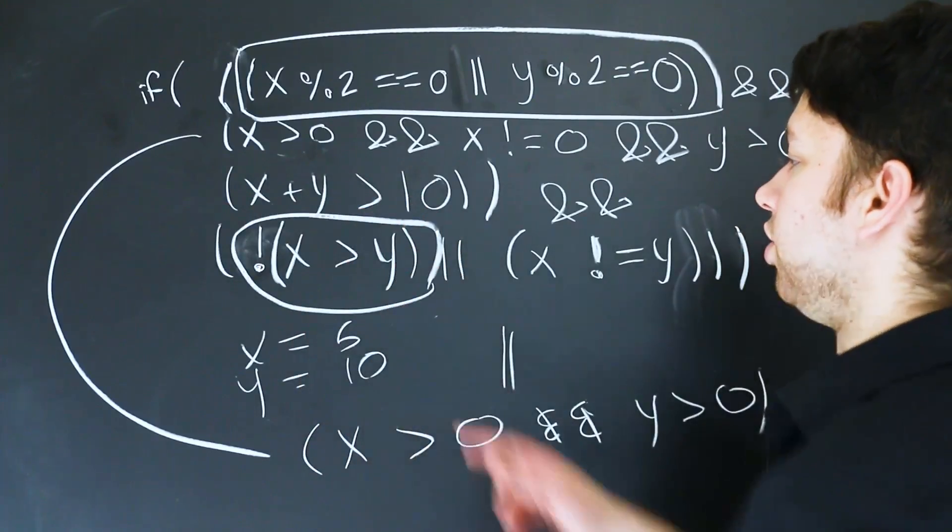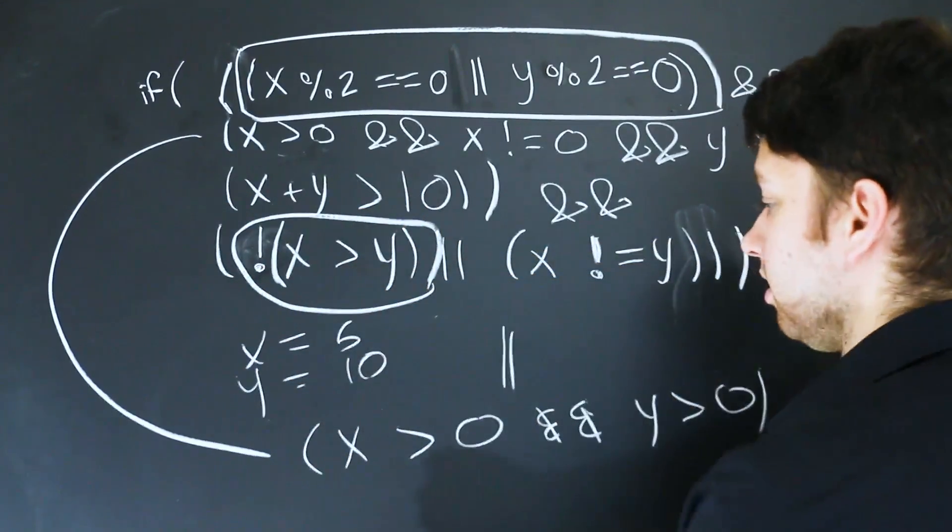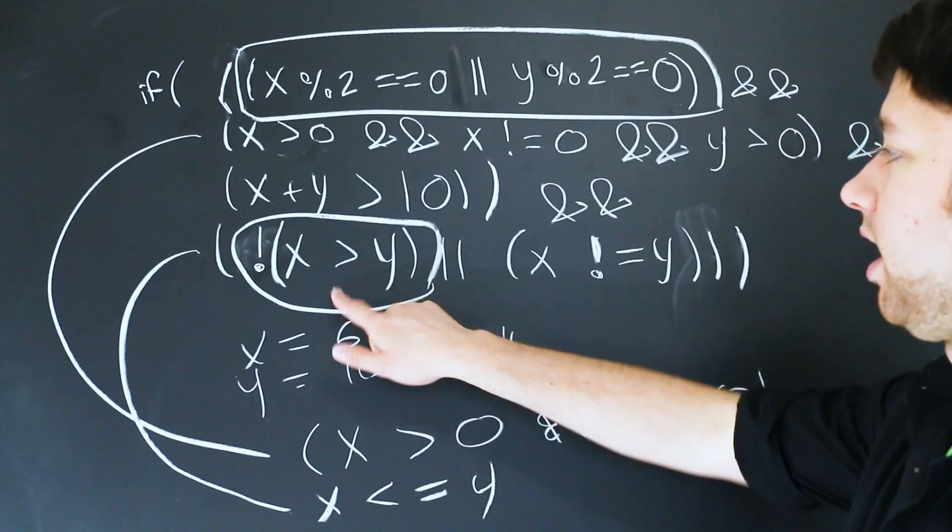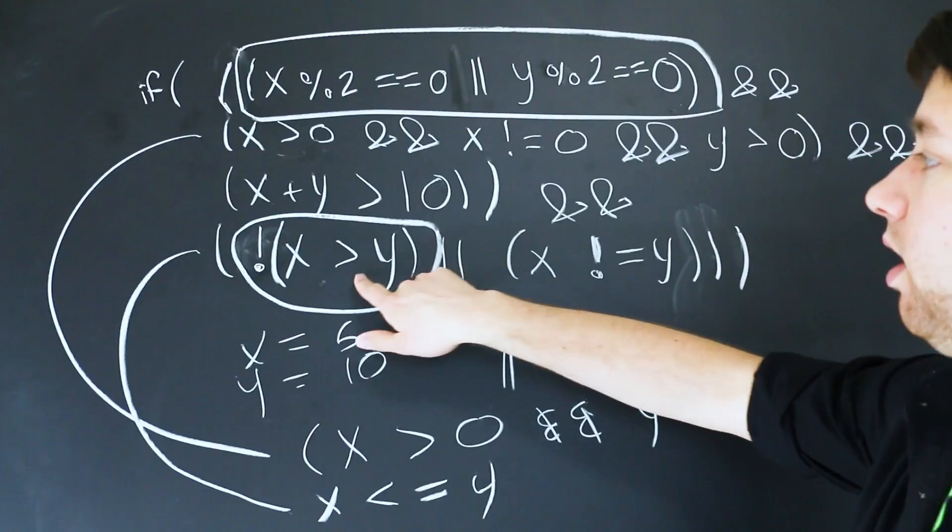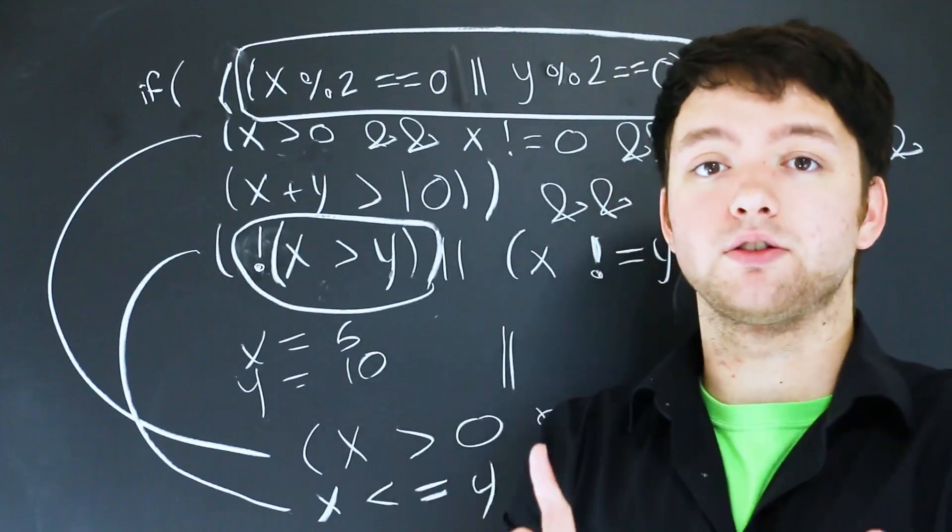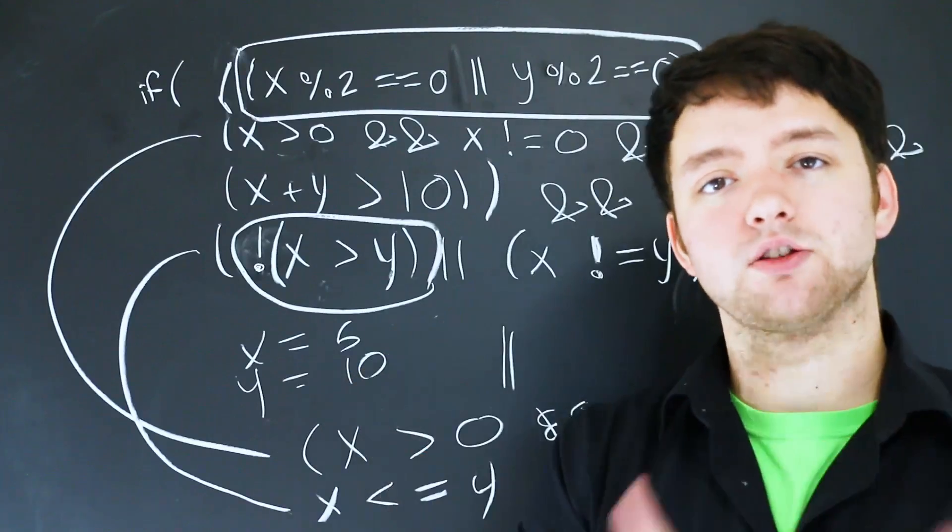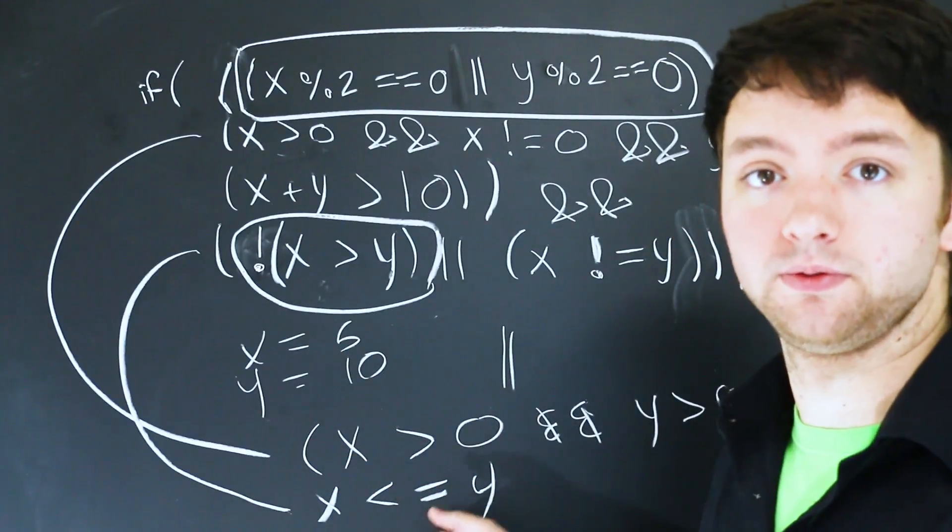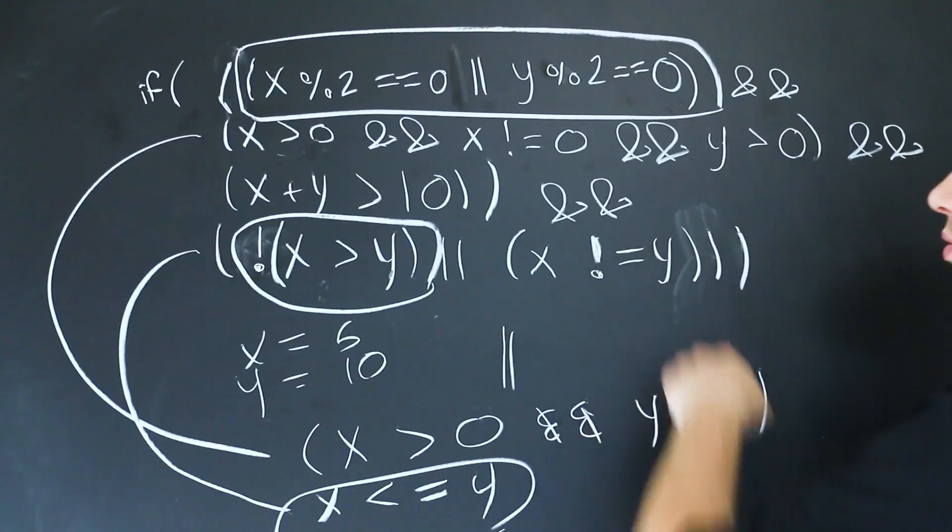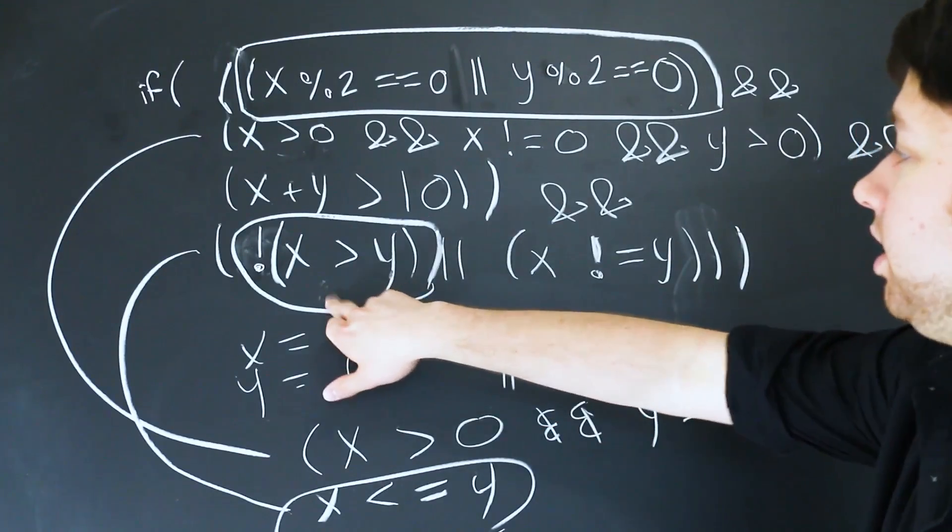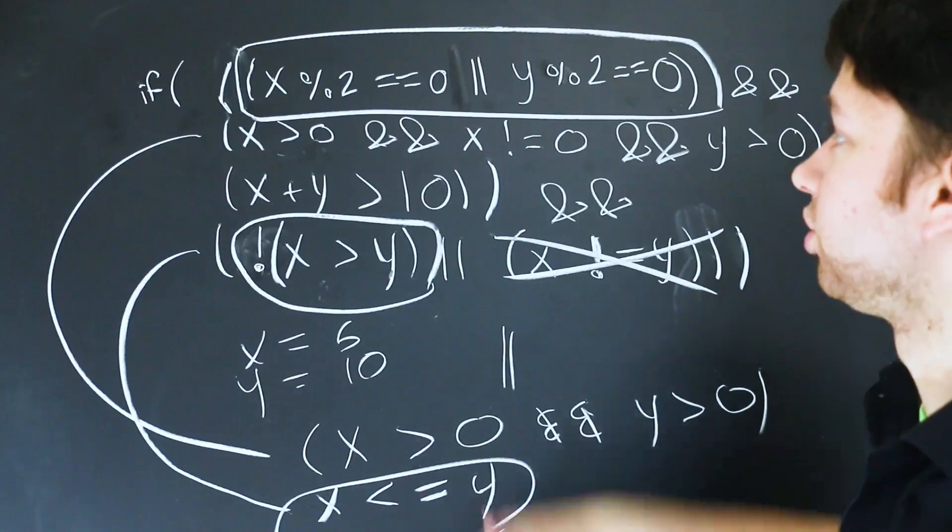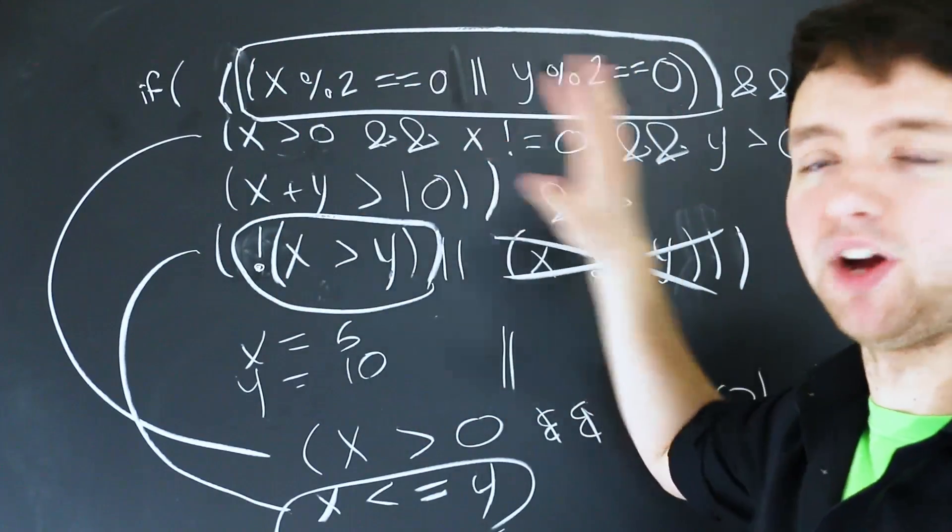This is another thing here. So we have a NOT operator with a comparison operator in parentheses. This could actually be rewritten as x is less than or equal to y. Because what it's saying is x is not greater than y because we're inverting it. So originally we had x is greater than y and then we want to flip that so x is not greater than y. But if something is not greater than y, it's automatically less than or equal to. So this could be cleaned up by replacing it with x is not equal to y. Oh, and look at that. x is not equal to y. We already have that in our expression. So x is not equal to y or x is not equal to y is redundant. So we could actually get rid of this second one here.